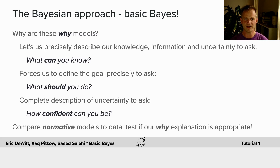One quick reminder: why are these 'why' models? They let us precisely describe our information, knowledge, and uncertainty to ask, what can you know? They force us to define the goal precisely to ask, what should you do? And they provide a complete description of our uncertainty to ask, how confident should you or could you be? And we can compare these normative models to data to test our why explanations and see if they're appropriate.